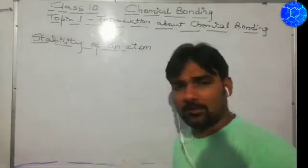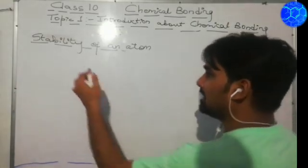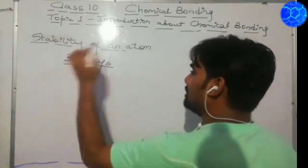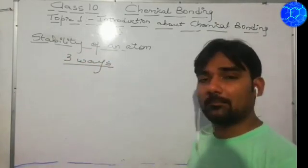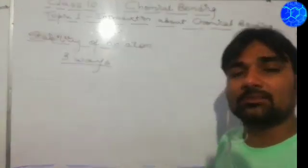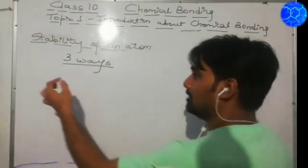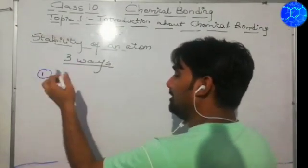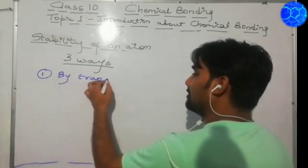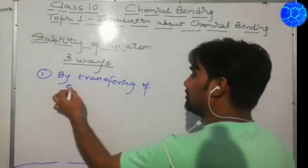Now moving further on the stability of an atom: there are three ways by which the atoms can become stable. The first way is by transferring of electrons.